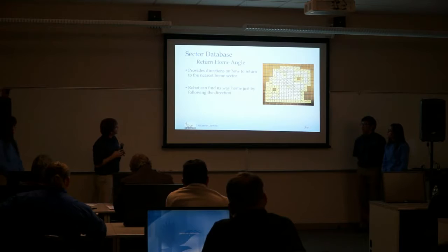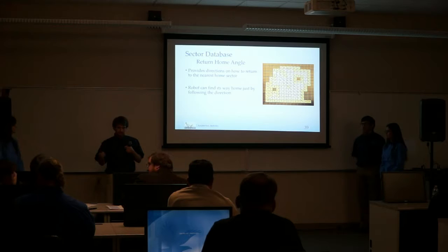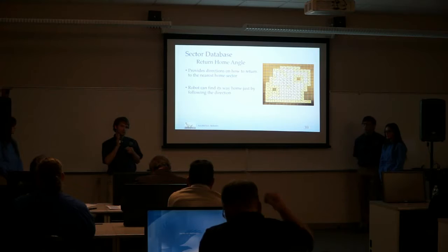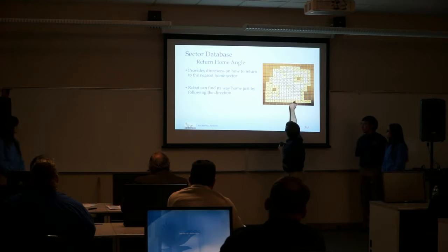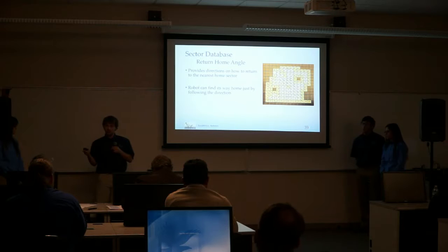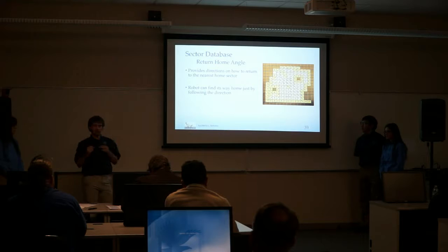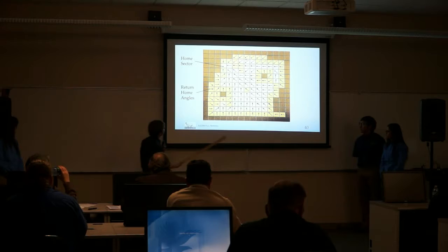The second sector matrix type is the return home angle matrix. This tells the robot how to get home — it reads the return home angle value for its current sector, moves in that direction, and no matter where it is on the lake it will always get back home. All arrows in the matrix eventually lead back to the home sector. This avoids onboard calculations — the robot simply reads the database to figure out how to get home.